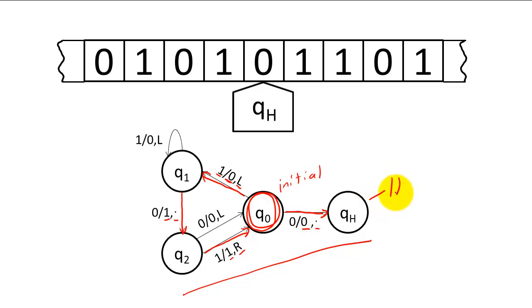The halt state is another critical state that every Turing machine needs. Without the halting state, the machine will keep looping forever and never complete its programmed task.